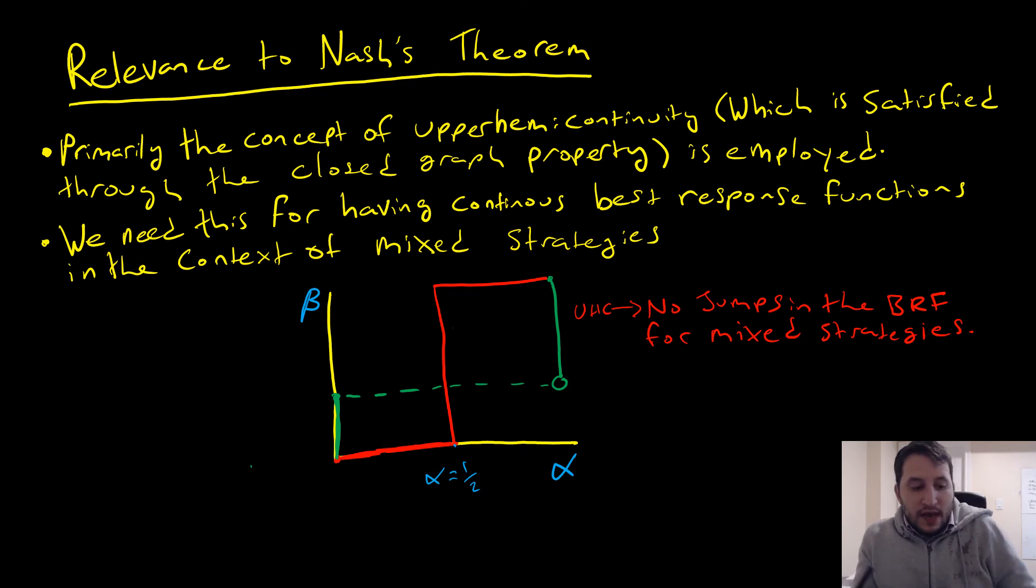So let's bring this down to Nash's theorem. The concept of upper hemicontinuity as opposed to lower hemicontinuity is employed. And we usually say that upper hemicontinuity is satisfied through this closed graph property which Nash's theorem possesses. We need upper hemicontinuity for having continuous best response functions in the context of mixed strategies because not every game has a pure strategy Nash equilibrium, but every game has a mixed strategy Nash equilibrium. So if we're looking at something like this here, this here is a correspondence, the best response correspondence. And we say that it is upper hemicontinuous. However, something like this here, where we're going to see a little bit of a discontinuous jump in our mixed strategies, like that, that's just not going to happen. And as a result, we're just not going to have a Nash equilibrium here.